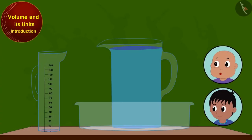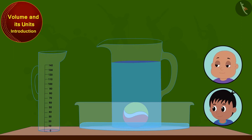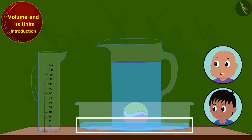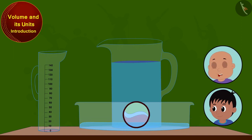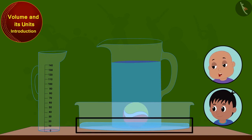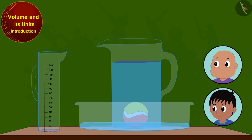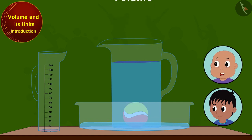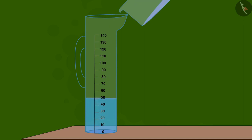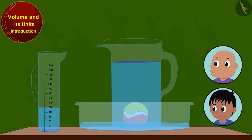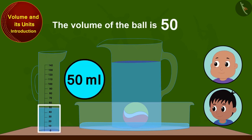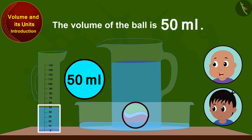Look Raju, the ball tries to make its space in this jug, so the water spills out. The more the ball tries to make its space inside the jug, the more water spills out. This is called its volume. Here, 50 milliliters of water spilled out, so the volume of the ball is 50 milliliters.